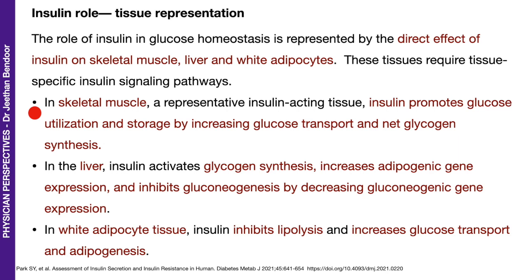In the skeletal muscle, a representative of insulin-acting tissue — that is why it is very important to talk about it — insulin promotes glucose utilization and storage by increasing glucose transport and net glycogen synthesis. In the liver, insulin activates glycogen synthesis, increases adipogenic gene expression, and inhibits gluconeogenesis. Now, in the white adipose tissue, insulin inhibits lipolysis and increases glucose transport and adipogenesis. So the whole balance is to take that glucose away from the blood and convert it into storage forms — glycogen and fat.